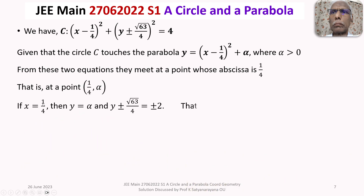When x = 1/4 in the circle's equation, (x − 1/4)² = 0, so (y ± √63/4)² = 4, giving y ± √63/4 = ±2. Therefore y = ±2 ∓ √63/4. Since the point of tangency also gives y = α, we equate: α = ±2 ± √63/4.